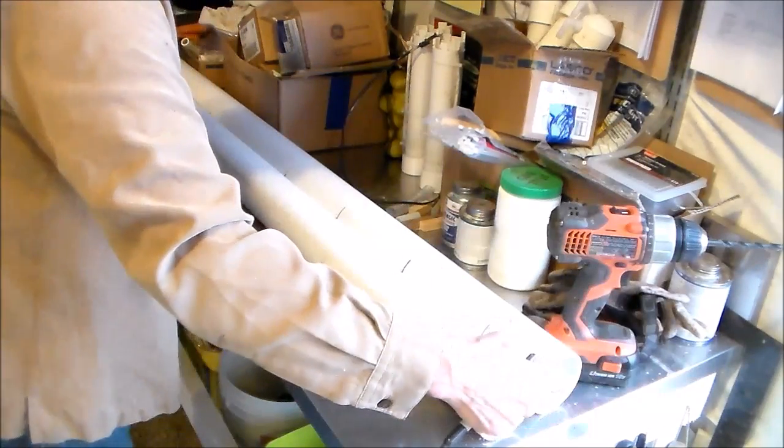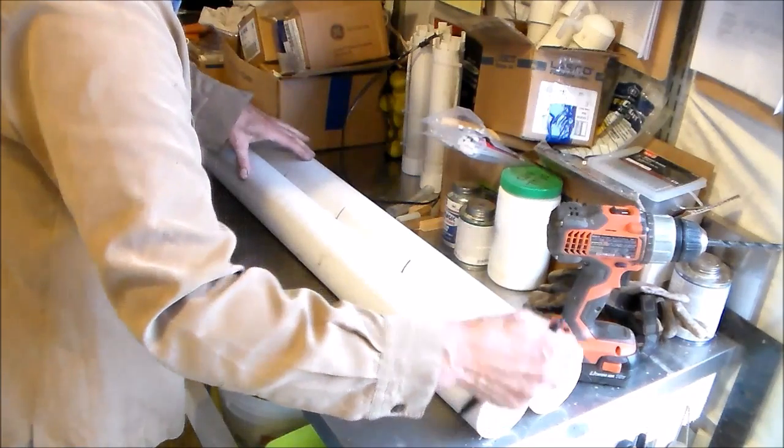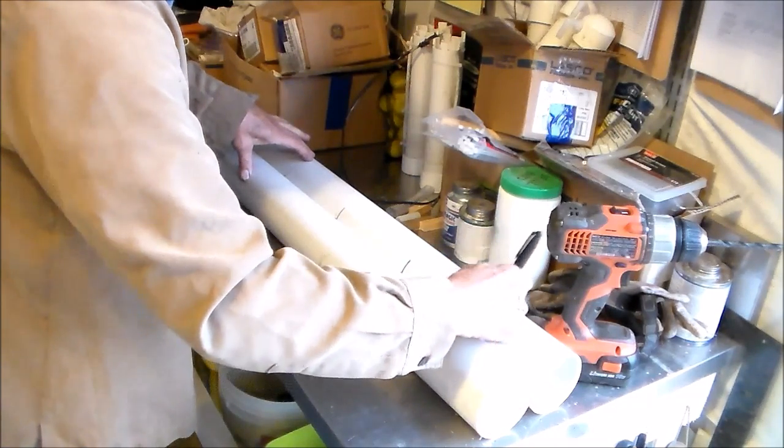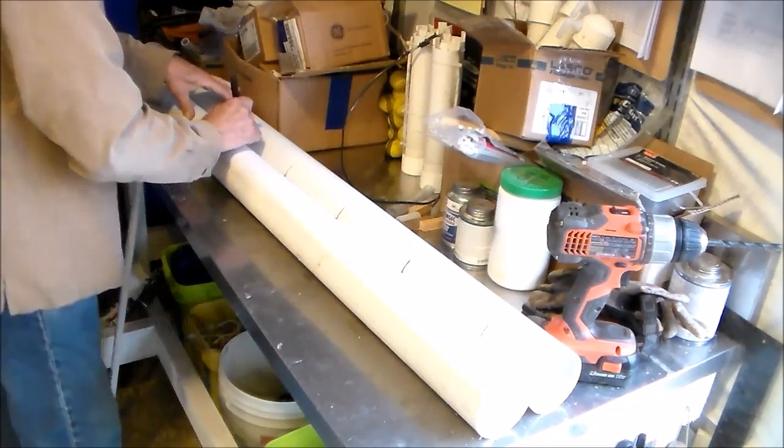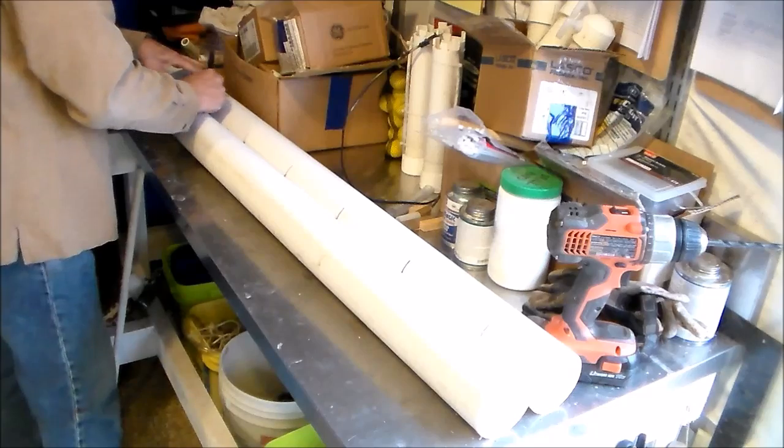Right here I'm using the first tube as a guide for the vertical line. Now here you can see me putting the tip of the sharpie in the slot and drawing it across the second tube.